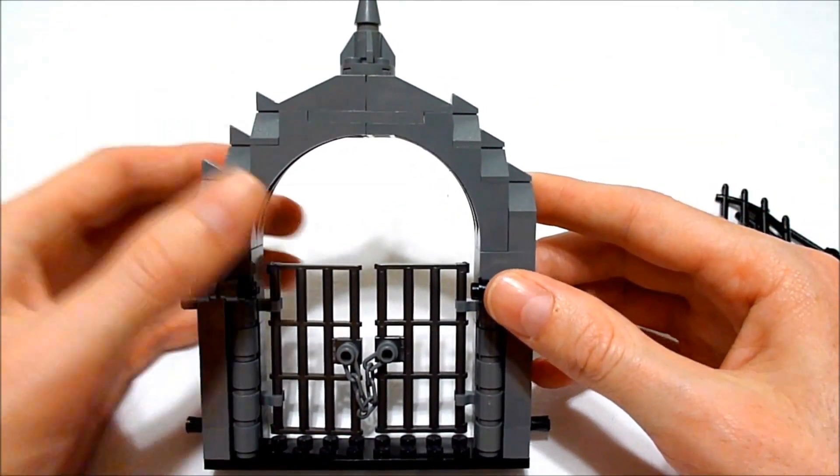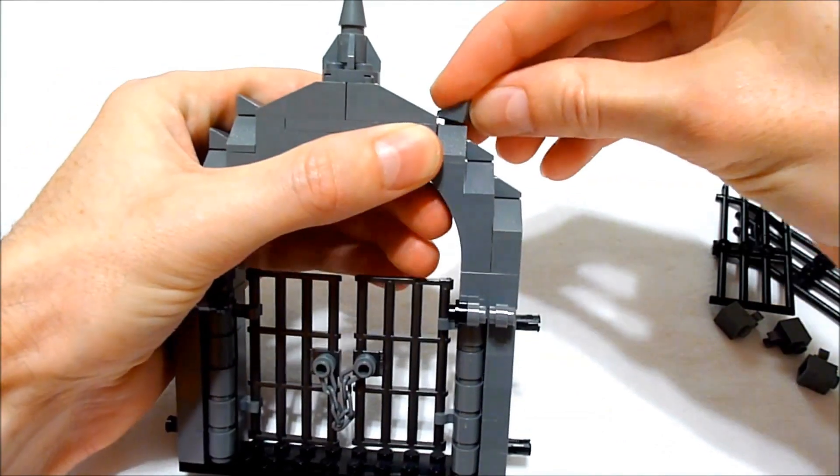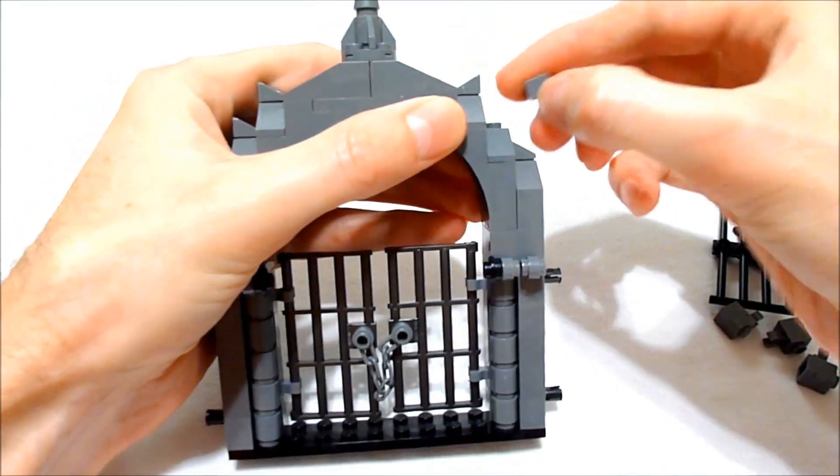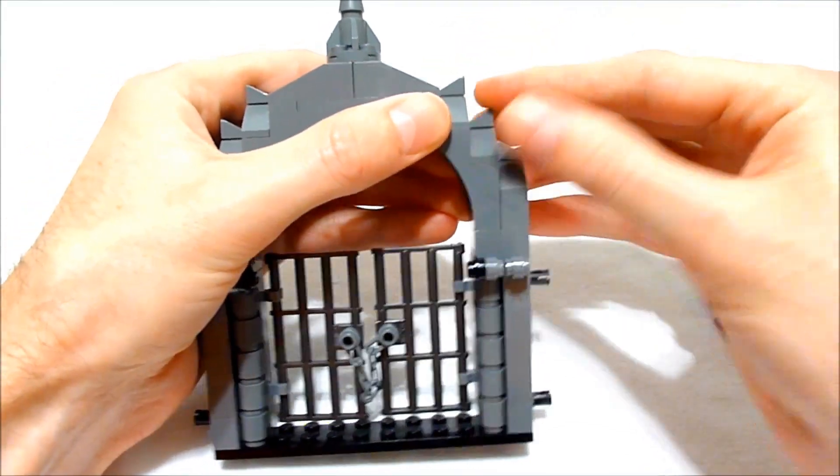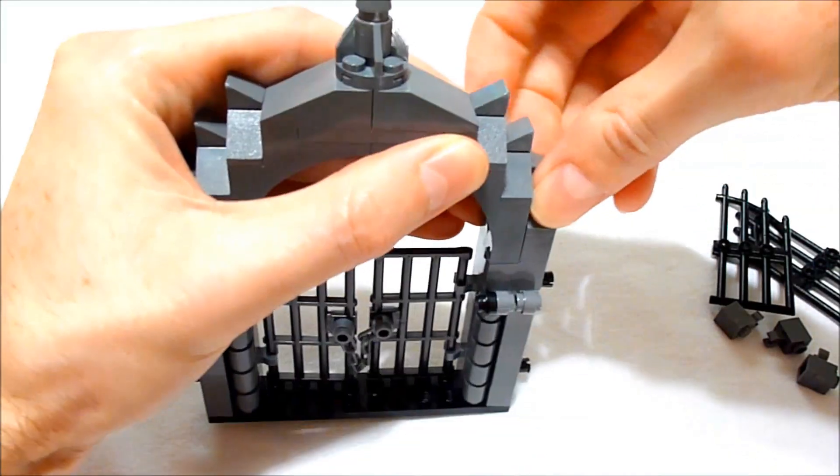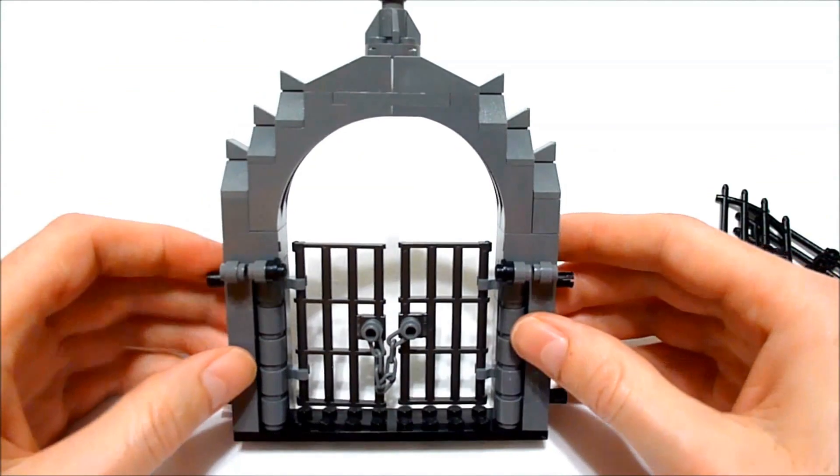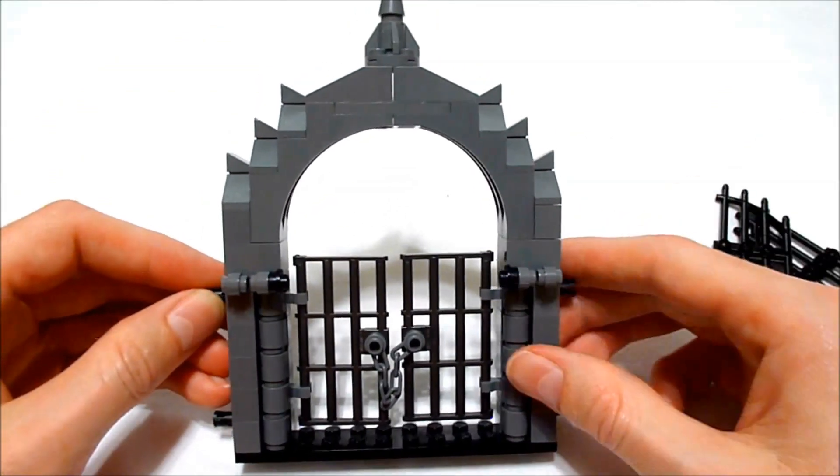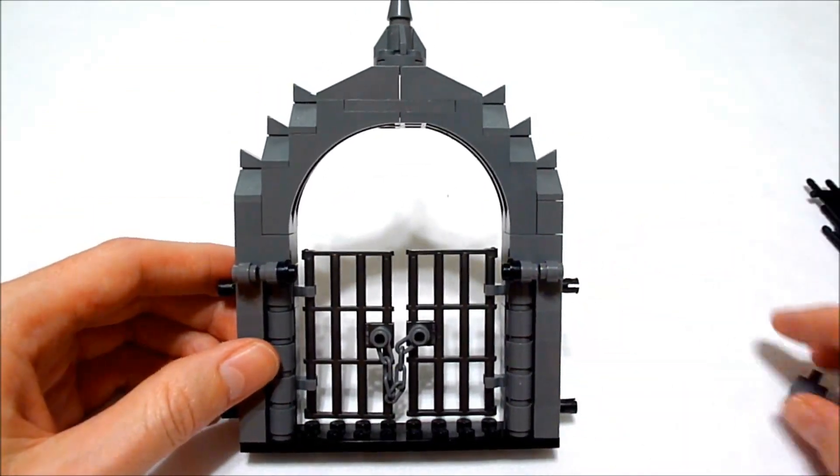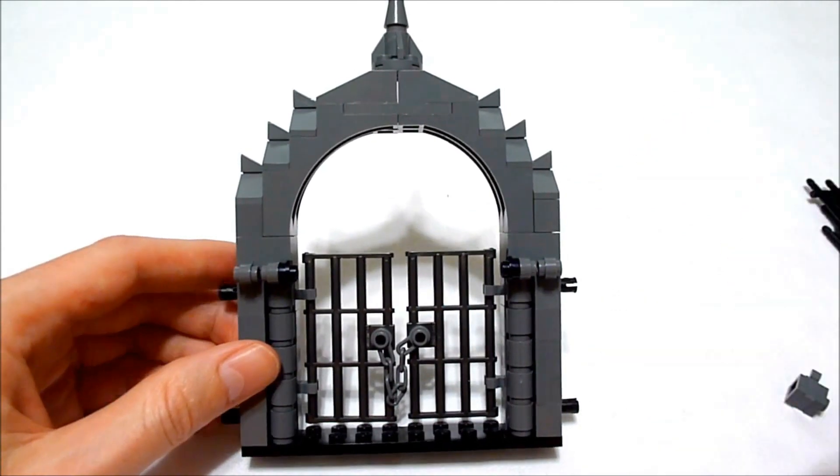So those are a few additional design items that you might take into consideration when making your own version of the gate. Hopefully you check back in a couple days to see the other versions for the fence piece as well as the corner piece.